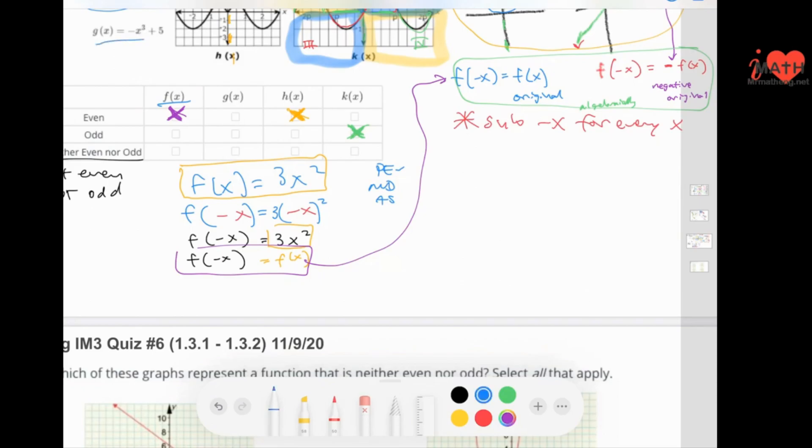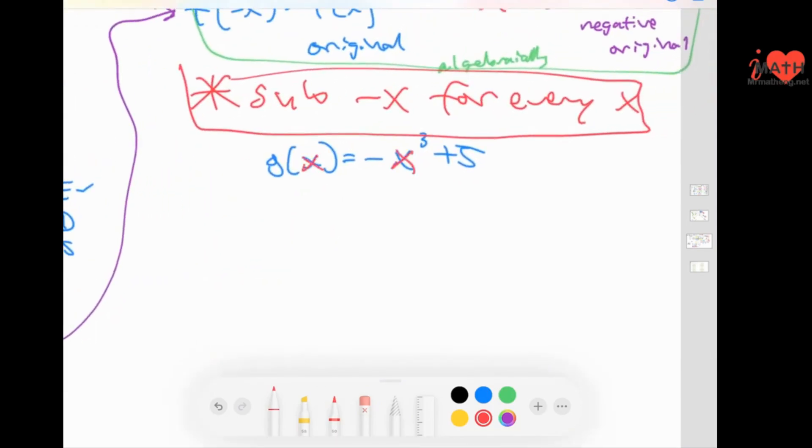Let's do G of X. G of X equals negative X to the third plus 5. We're going to substitute in negative X for every X value. So I see an X, I'm going to write negative X. It's a way of testing it. So I have G of negative X equals negative. There are my substitutions there in parentheses, to the third power plus 5. Don't forget you're using PEMDAS. So negative X to the third power just means negative X times negative X times negative X. That would be negative X to the third power. And you still have this negative and plus 5.